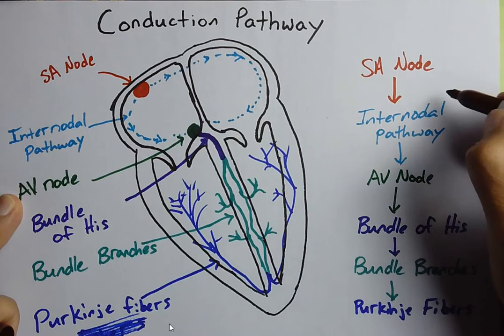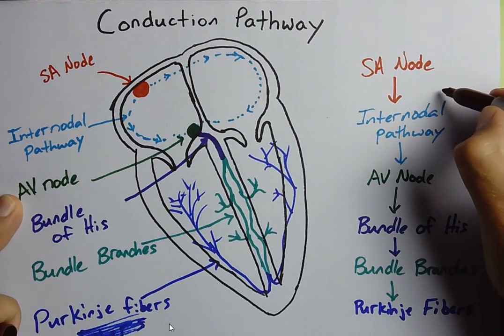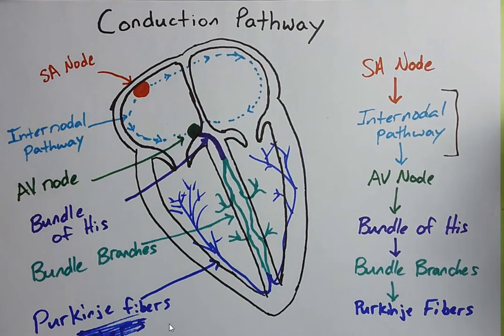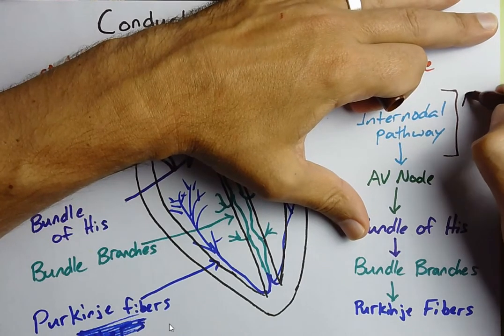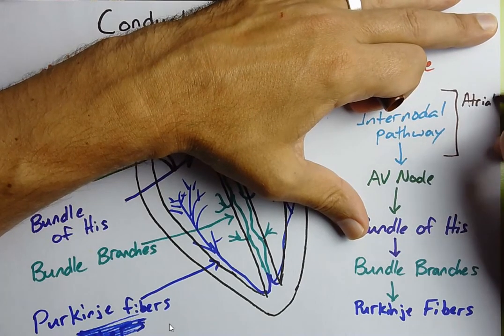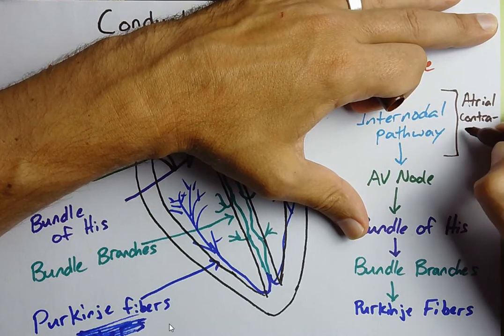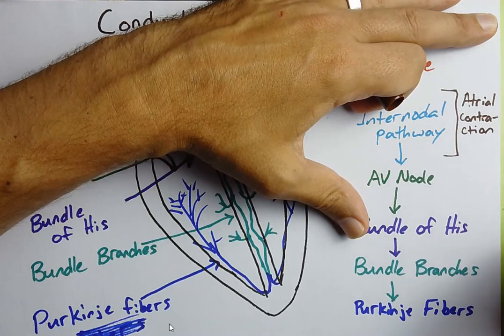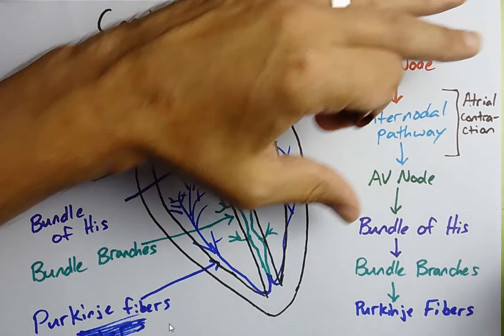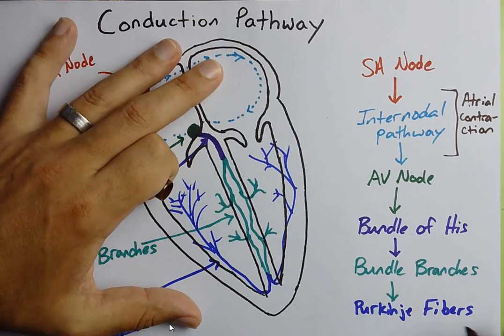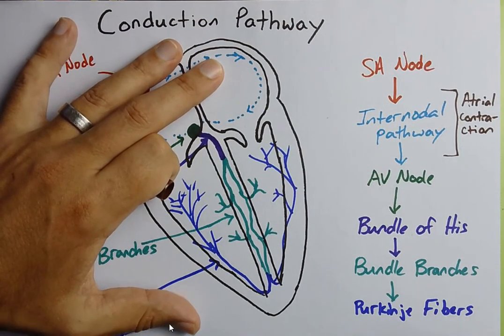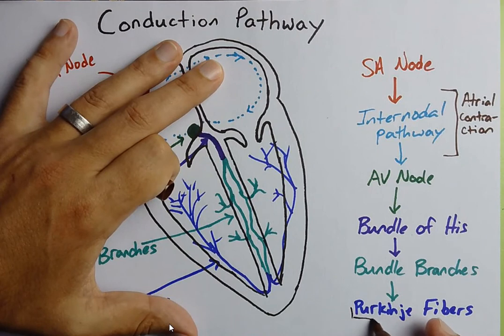As a quick reminder, as the current spreads out through the internodal pathways, what else can we think about here? Atrial contraction. Whereas it's not until it's reached the Purkinje fibers down here, and everything below this point, now we're going to get ventricular contraction.